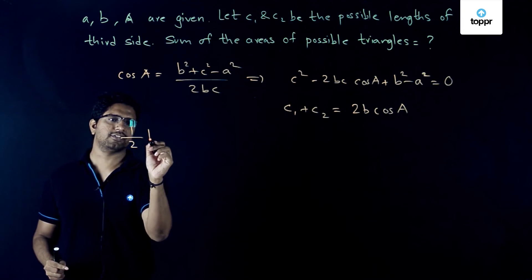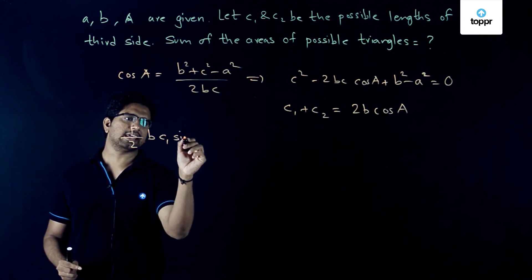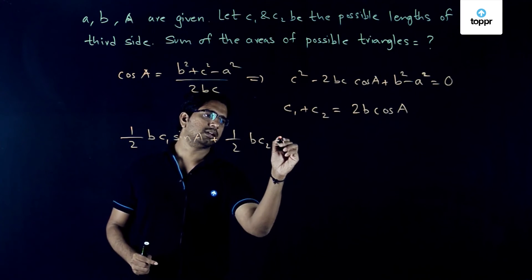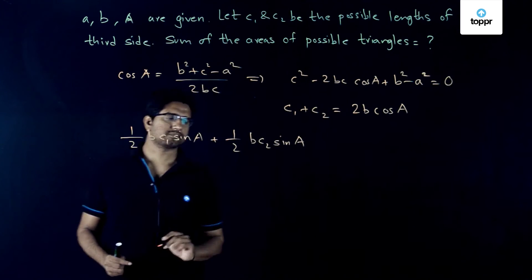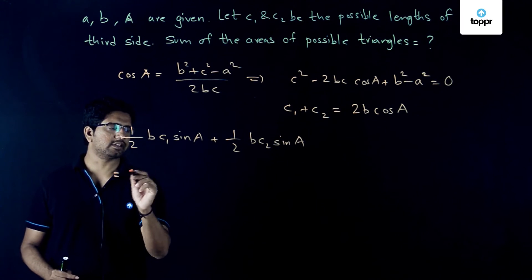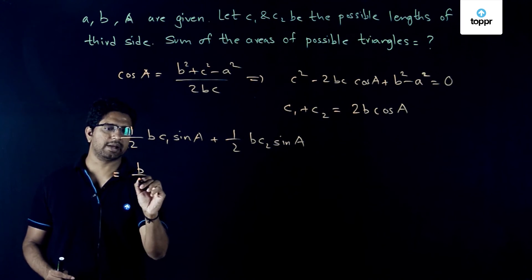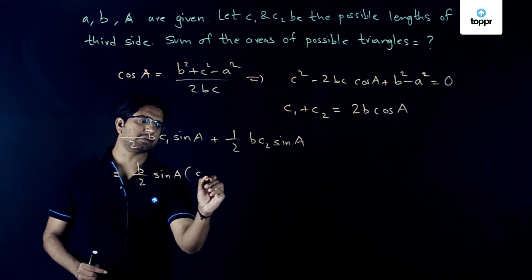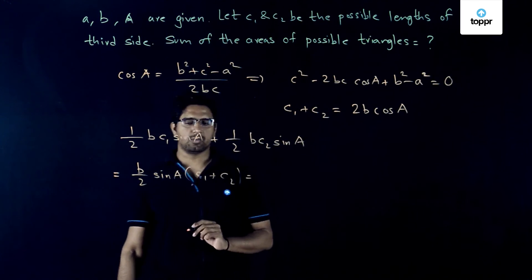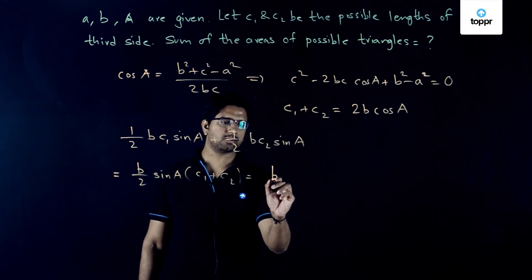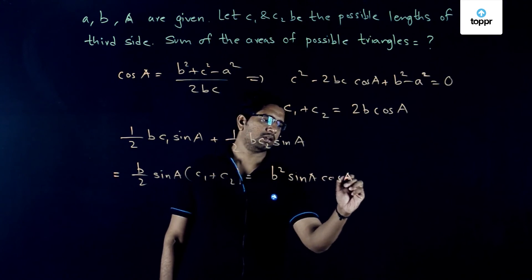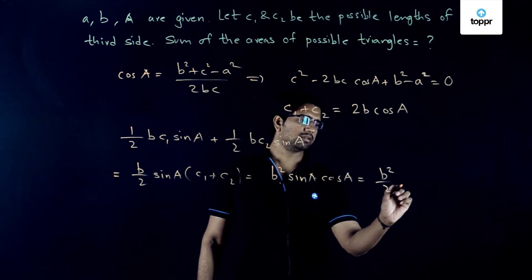The sum of the areas of the two possible triangles is: ½·B·C1·sin A + ½·B·C2·sin A. Taking out the common terms, this equals (B/2)·sin A·(C1 + C2). Substituting C1 + C2 = 2B·cos A, we get B²·sin A·cos A, which can also be written as (B²/2)·sin(2A).